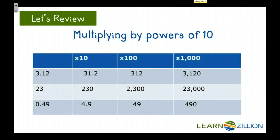This chart shows what happens to different numbers when we multiply them by powers of 10. In the first example, 3.12, when we multiply it by 10, it becomes 31.2. When we multiply it by 100, it becomes 312, and when we multiply it by 1,000, it becomes 3,120.